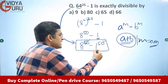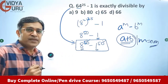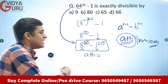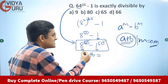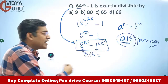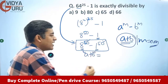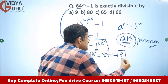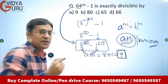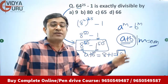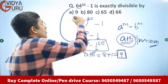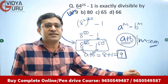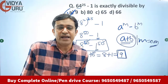So this expression is clearly divisible by a plus b. Here a is 8 and b is 1, so 8 plus 1 equals 9. This expression will be divisible by 9 because the power is 50, which is even. So option A is the answer — it is completely divisible by 9.